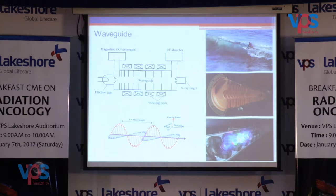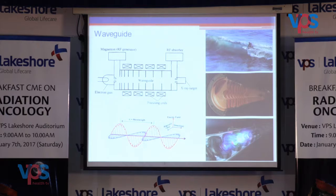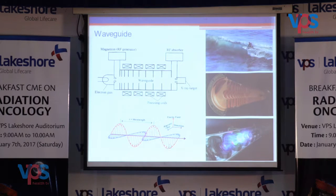The waveguide is a tube-like structure made of copper, separated by several copper disks with a hole in the center which allows the passage of electron particles. The input microwave propagates into the waveguide, and the electron particle is accelerated by the sinusoidal electric component of this microwave — analogous to the acceleration process of a surfrider.